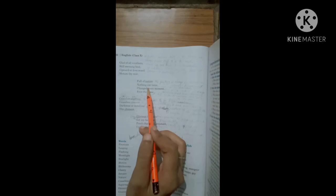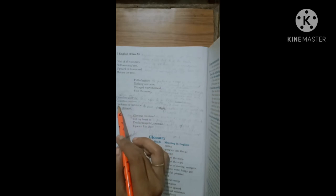Now our seventh para: Ceaseless aspiring, ceaseless content, darkness or sunshine thy element. The explanation: It aspires to go high. The fountain is always satisfied. It has an everlasting desire to move up always. Nature of the movement at every time.